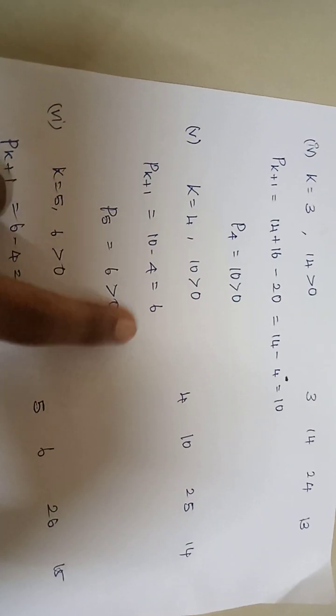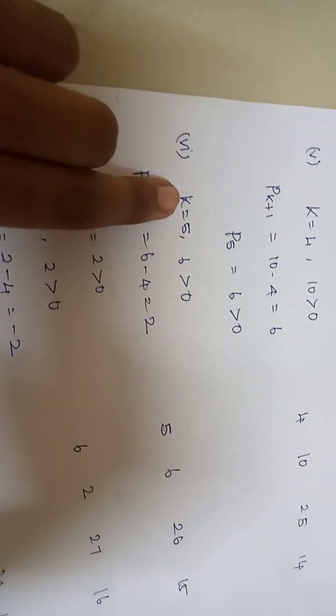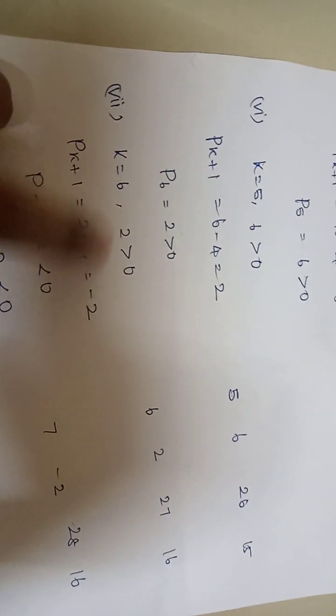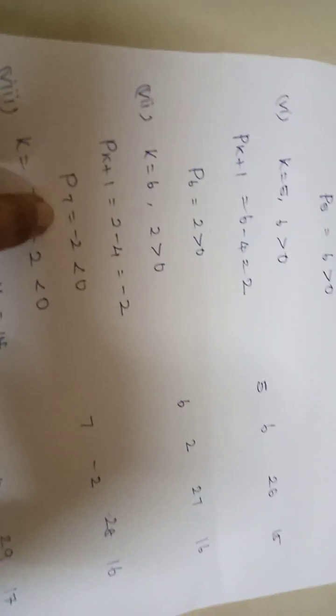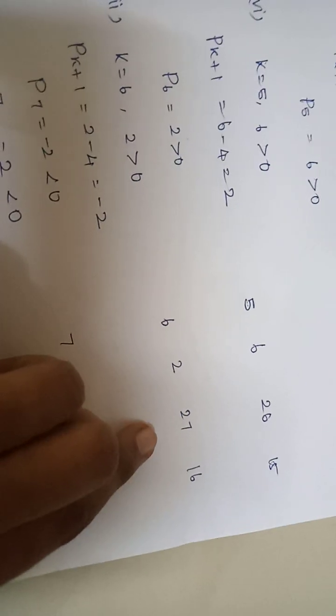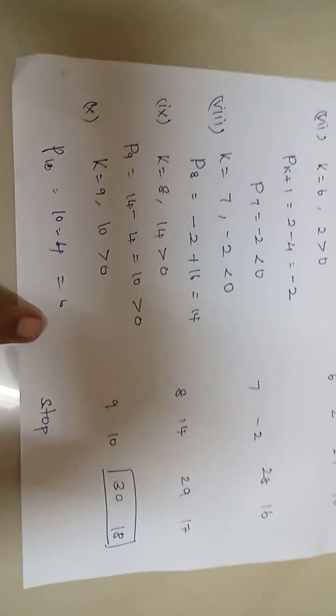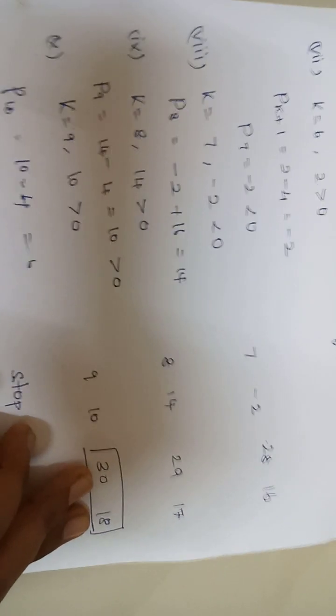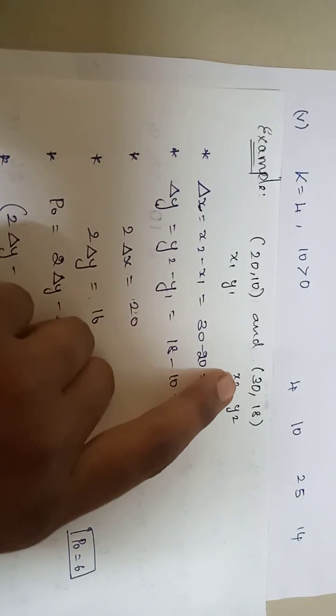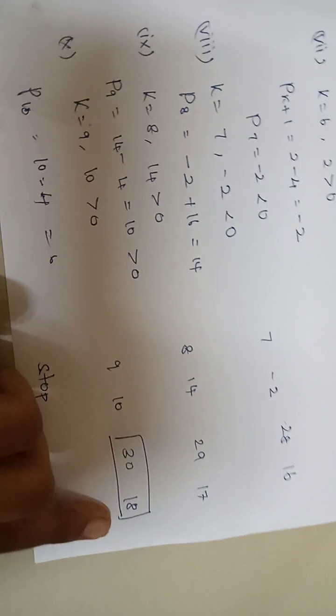For k=5, Pk = 6 > 0, so both x and y are each increased by 1 to get (26, 15). For k=6, Pk = 2 > 0, which then gives a negative value, so only x is increased — not y — giving (28, 16). Continue following these steps until reaching the endpoint (30, 18), which is x2, y2. Continue until you reach that final point.